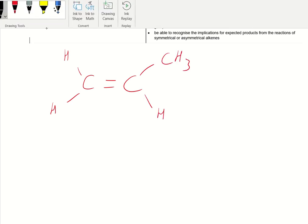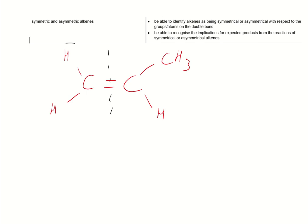A super quick video here. I'm not sure why this bit of the specification is where it is - it should be down where it's involved with electrophilic addition. It's about being able to identify whether alkenes are symmetrical or asymmetrical and recognize the implications. So if I draw out a quick alkene, all it wants you to be able to do is recognize that these are different.